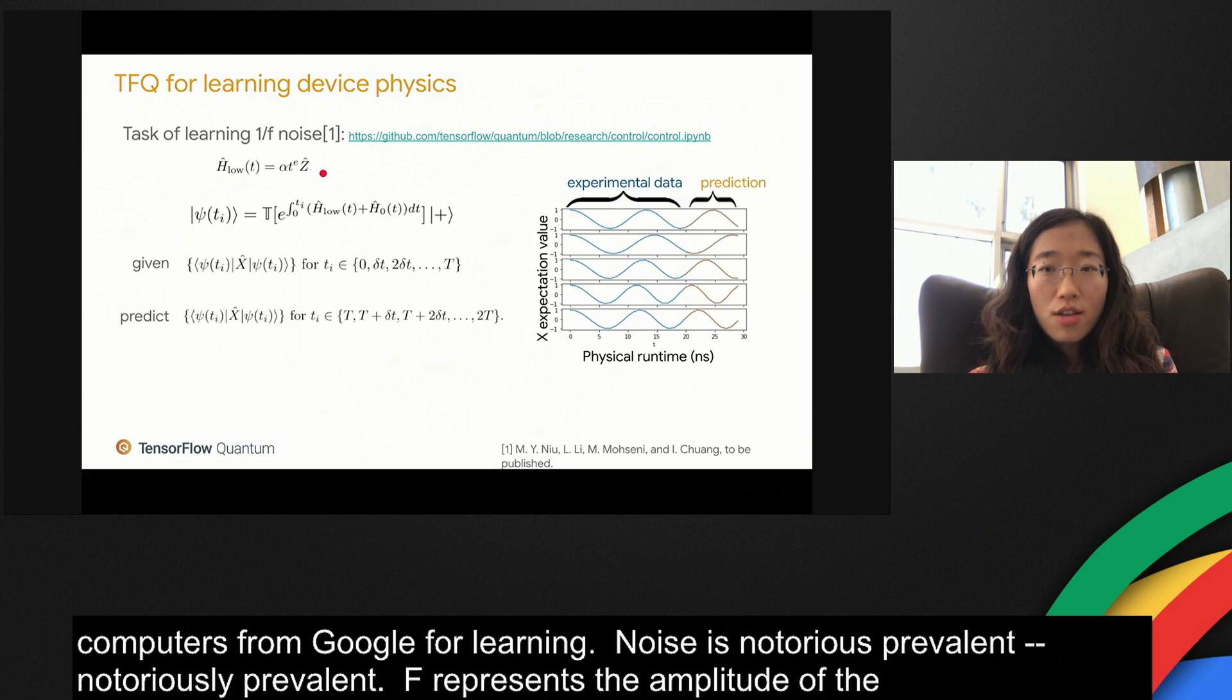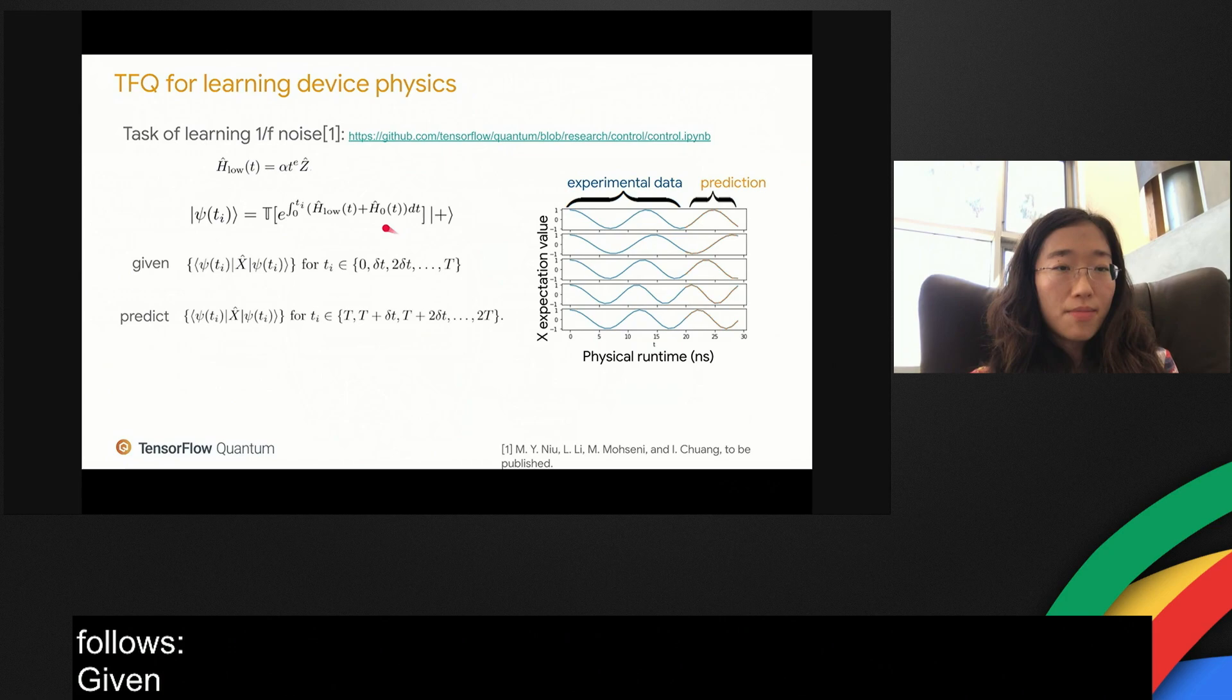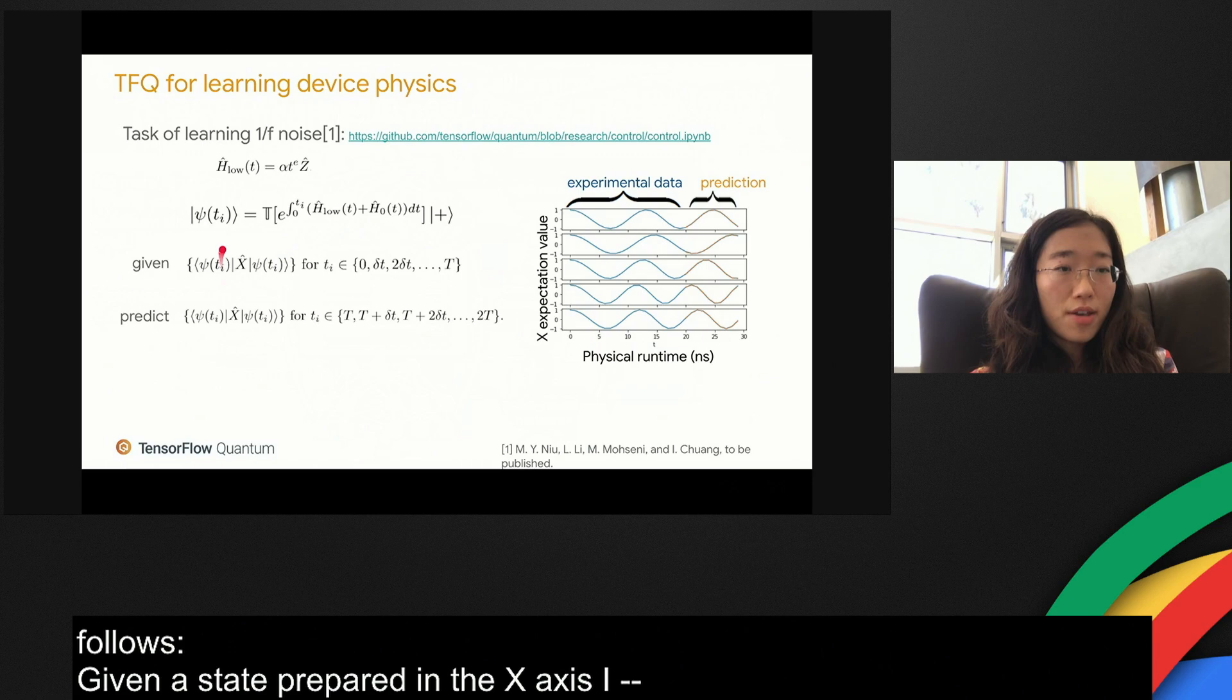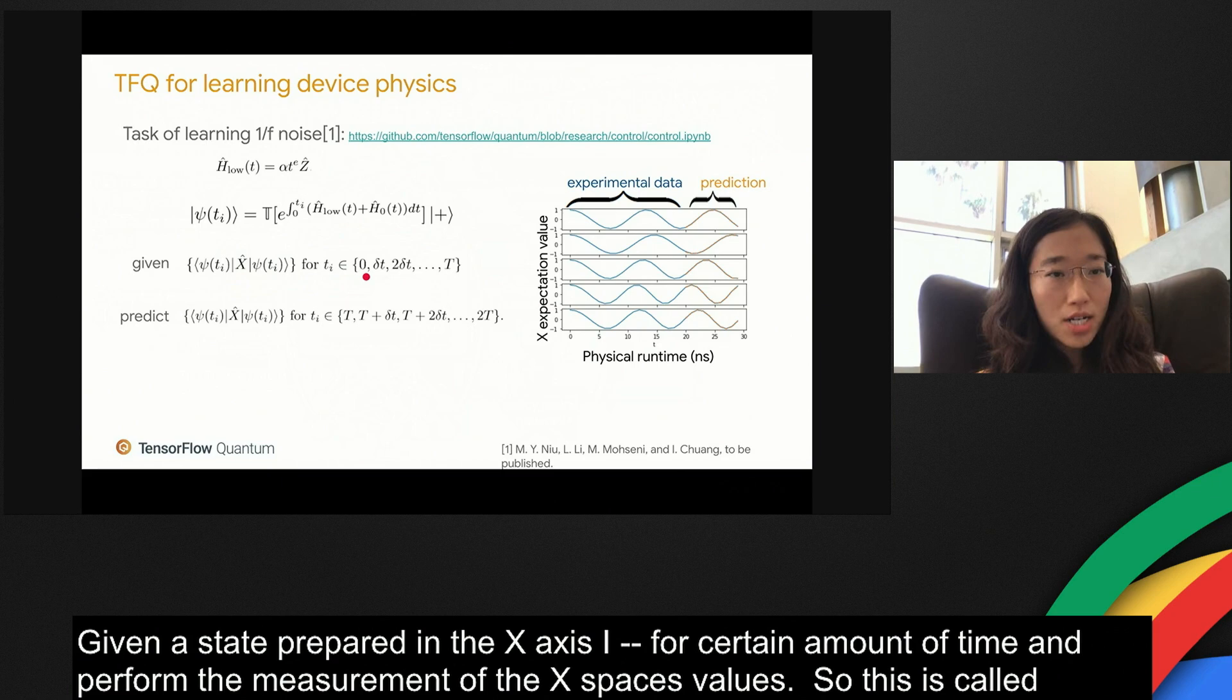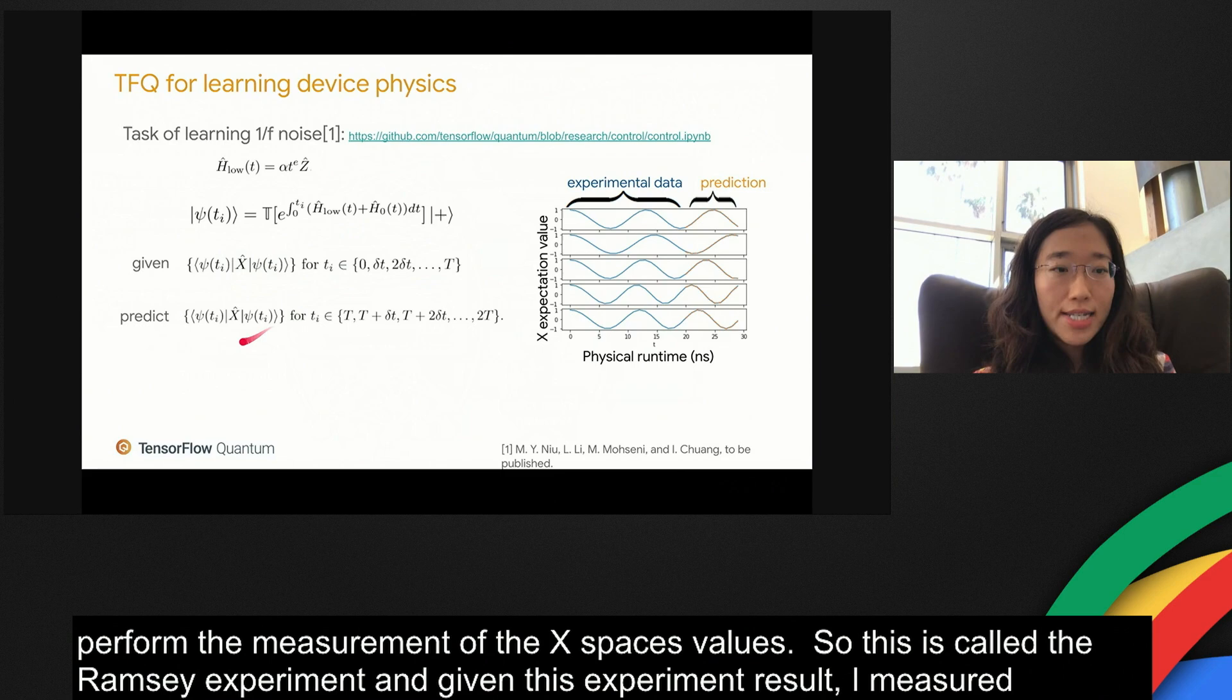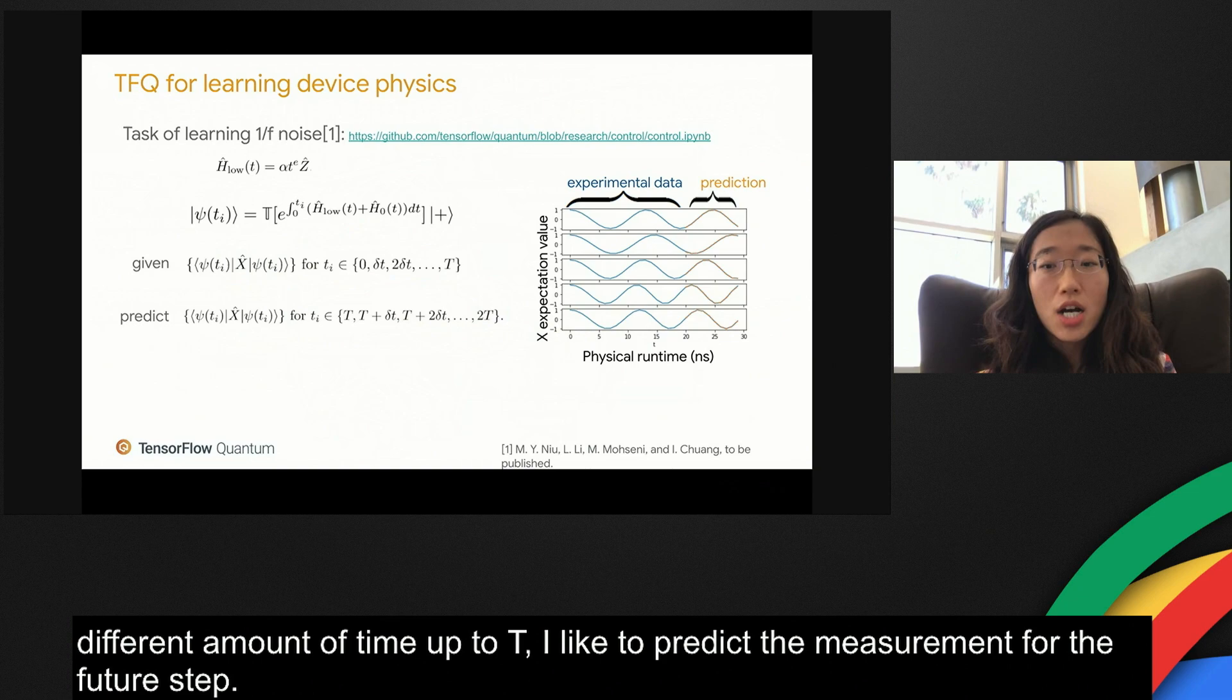The problem I want to solve is defined as follows. Given a state prepared in the X basis, I evolve it under Z Hamiltonian H0 for a certain amount of time and perform the measurement of the X basis, X expectation values. This is usually called the Ramsey experiment. Given this experiment result measured for different amount of time up to T, I'd like to predict the measurement for the future time step. A successful prediction of this time sequential data will also mean a correct inference of the 1/f noise parameters.